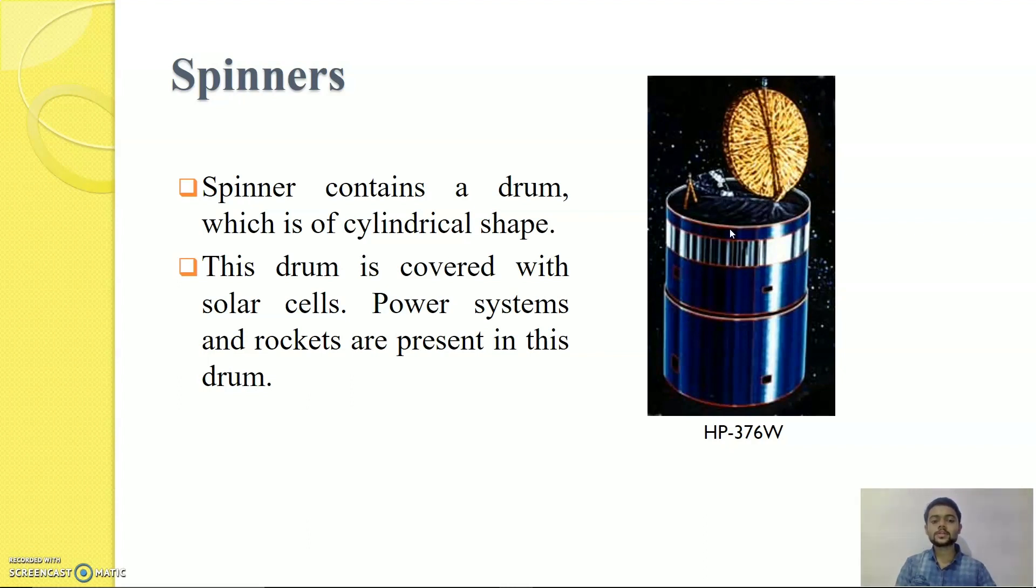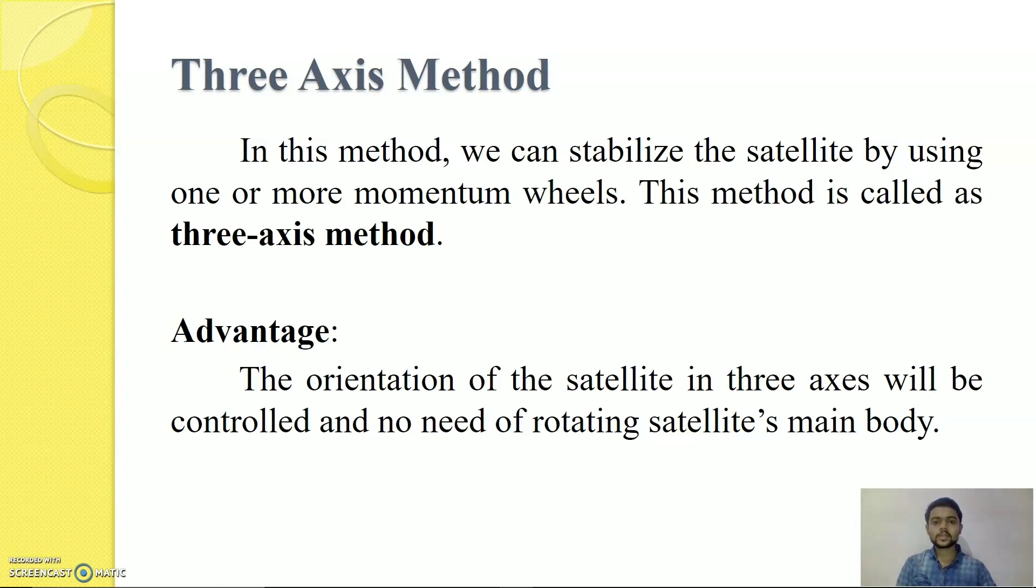Here, I have shown one spinner satellite named Boeing 376. It was introduced in 1978 by Hughes Space and Communication Company. It was a spin-stabilized bus that the manufacturer claims was the first standardized platform. In spinning the satellite method, the main disadvantage that we faced was rotating the whole body of the satellite and this disadvantage can be eliminated with the help of 3-axis method. In this method, one or more momentum wheels are used to stabilize the satellite.